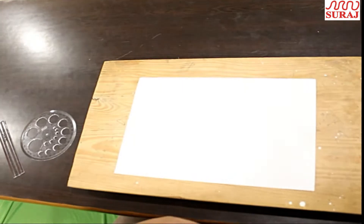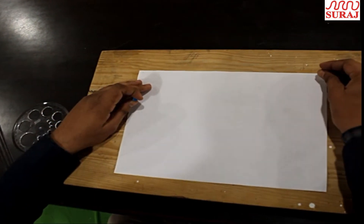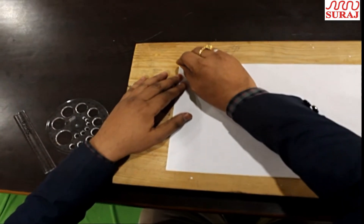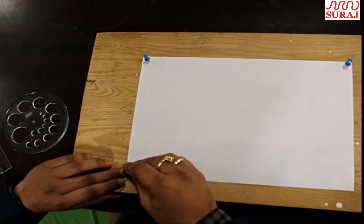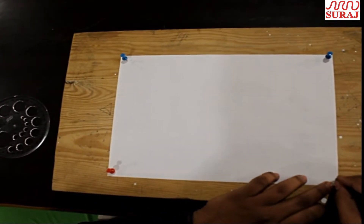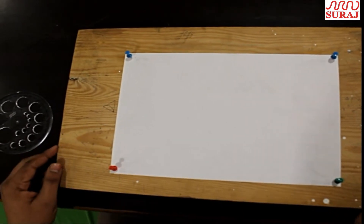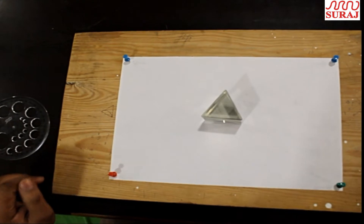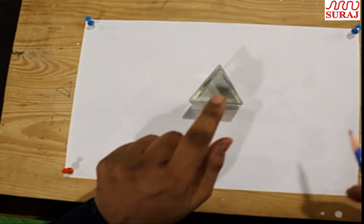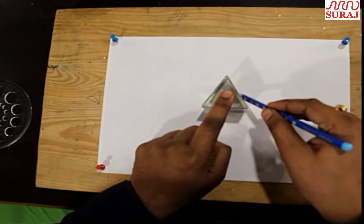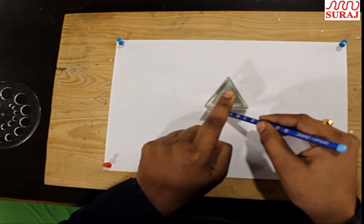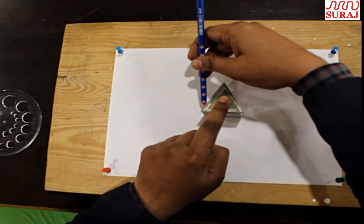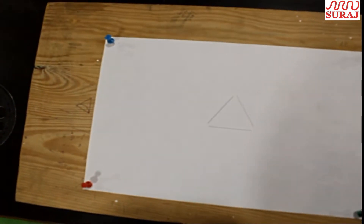Now we are going to perform the experiment. First, we need to fix the white paper on the drawing board. We fix this A4 size paper on the drawing board with the help of knitting needles. Now we will use the prism, and to find the angle of prism we will draw a sketch of it. We want to find out the angle of the prism, so we draw the sketch of the prism on this white paper.